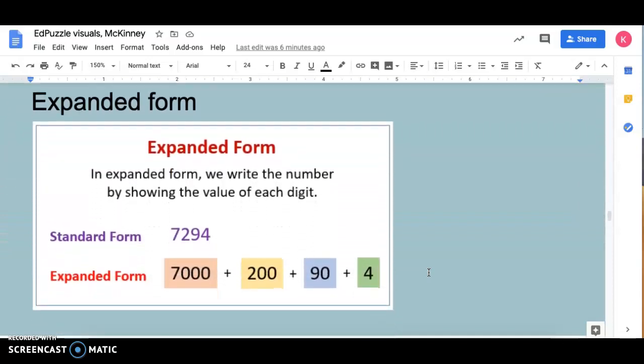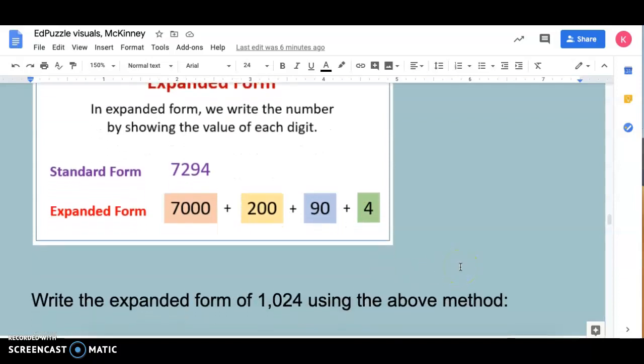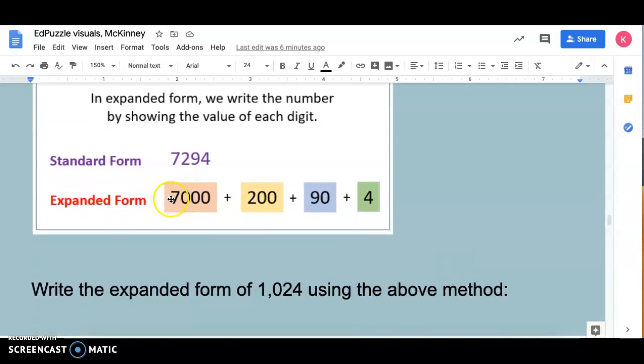Then we have expanded form. The first way we're going to do it is this method. So 7294. The seven really stands for 7,000. The two for 200, the nine for 90, and the four for just four ones. So using that method of expanding it like this, write the expanded form of 1024.